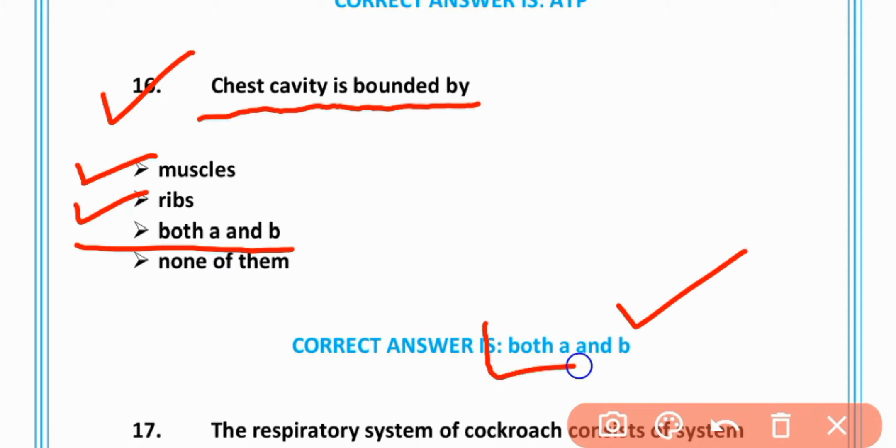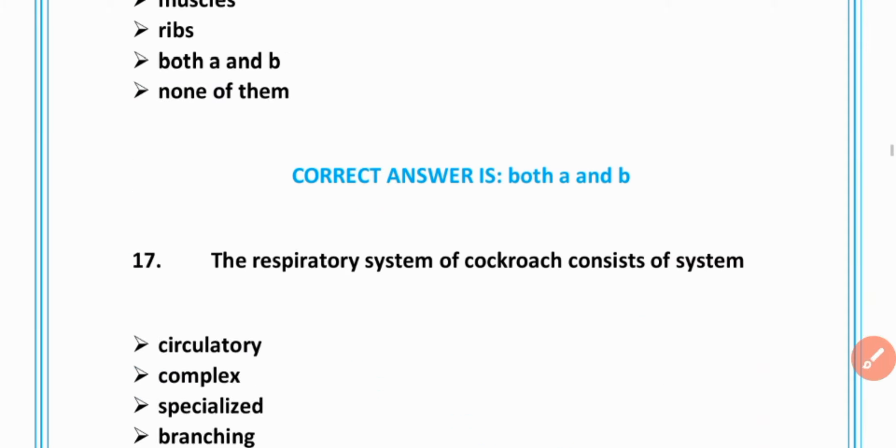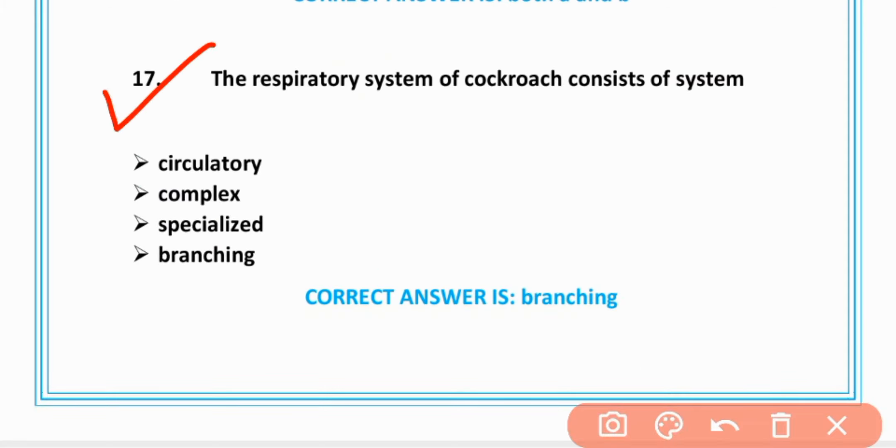MCQ number 16: Chest cavity is bounded by muscles as well as ribs, option C is correct. MCQ number 17: The respiratory system of cockroach consists of branching system, option D is correct.